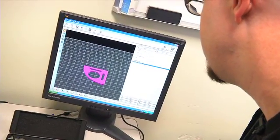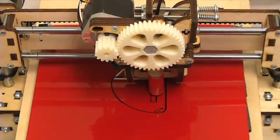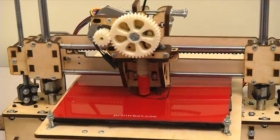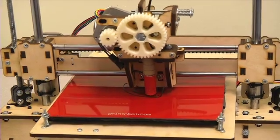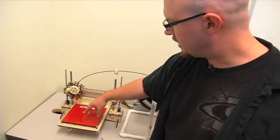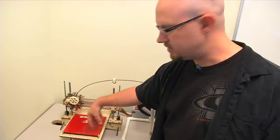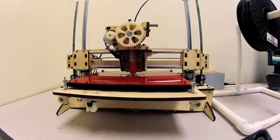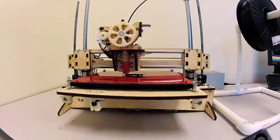So this is a hot end right here and plastic is pushed down into it through this mechanism right here. And then the rest of it's just a bed that moves in this direction, a head that moves in this direction, and a bridge that moves in this direction. And it puts down the plastic, draws an outline of a shape, and then moves up and does it again and keeps building it up layer by layer and prints a three-dimensional object.